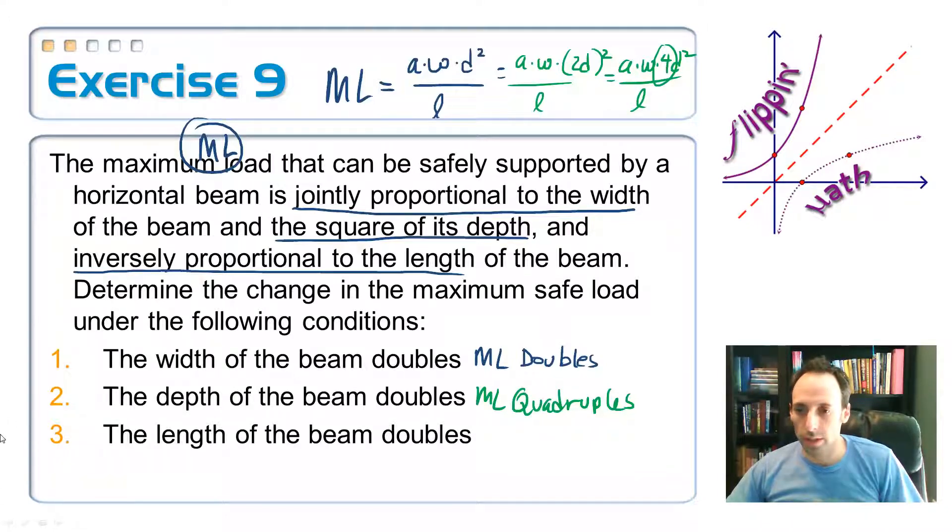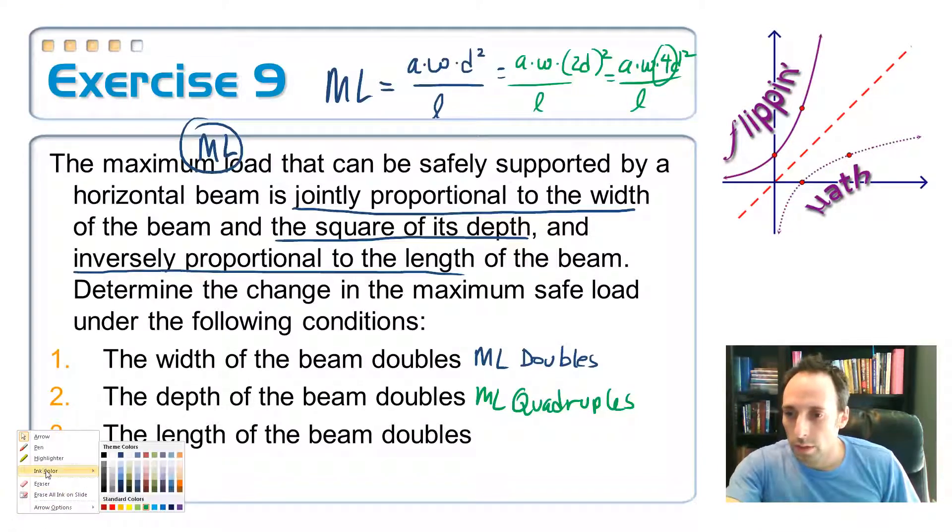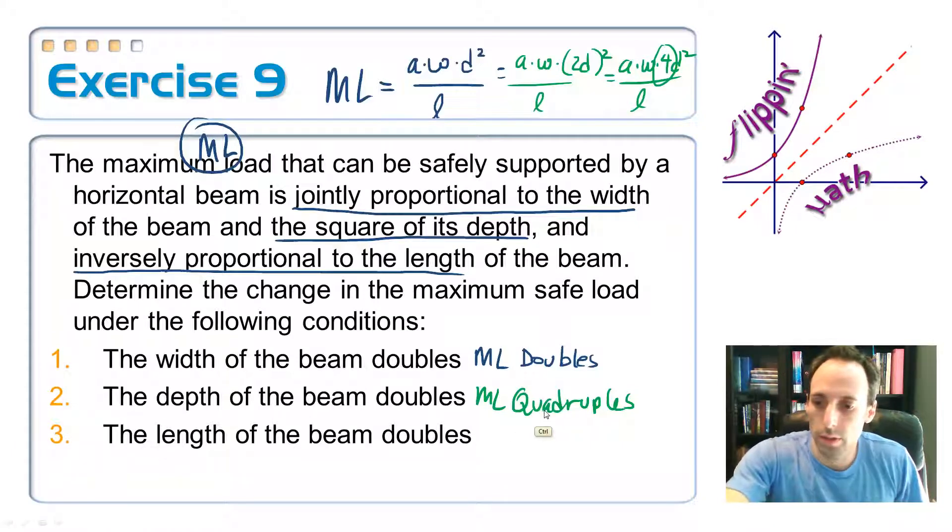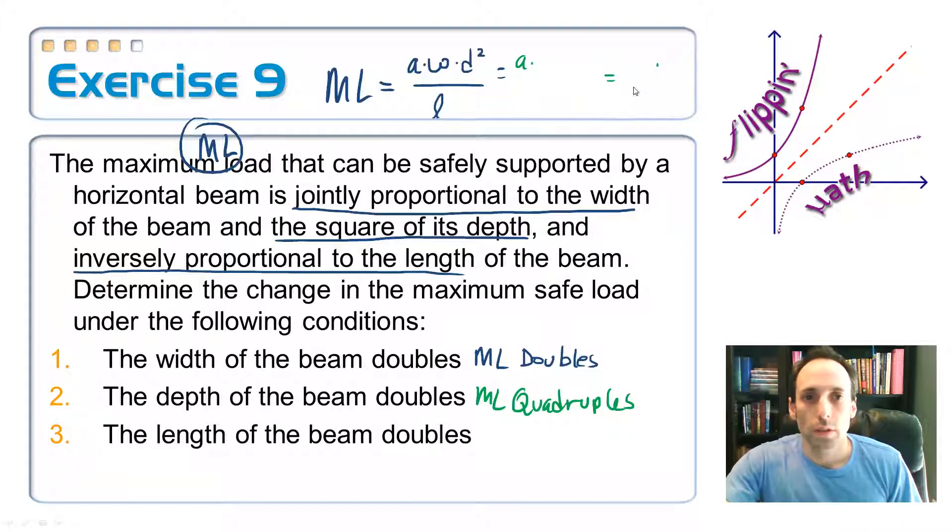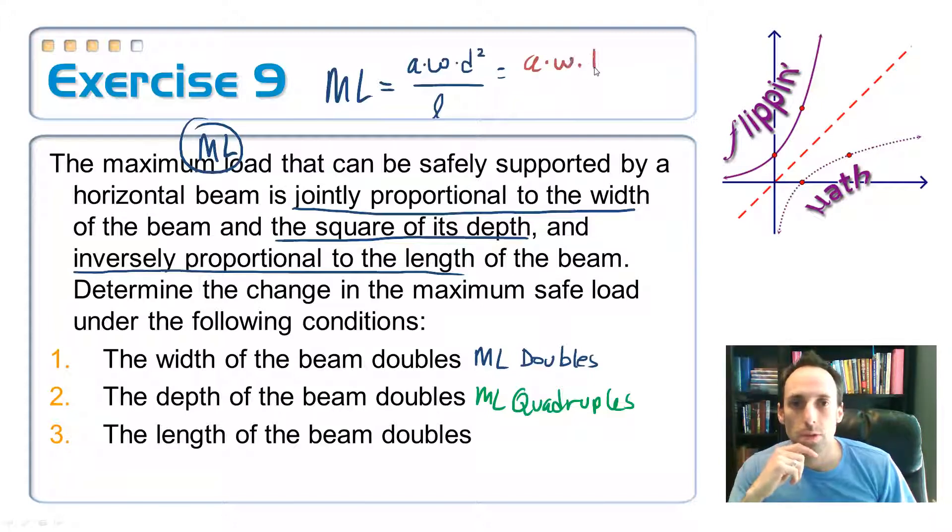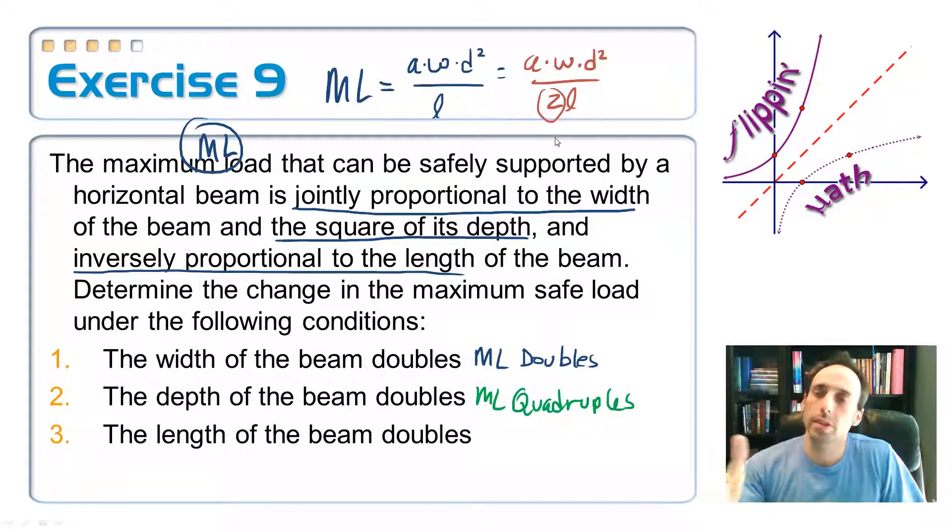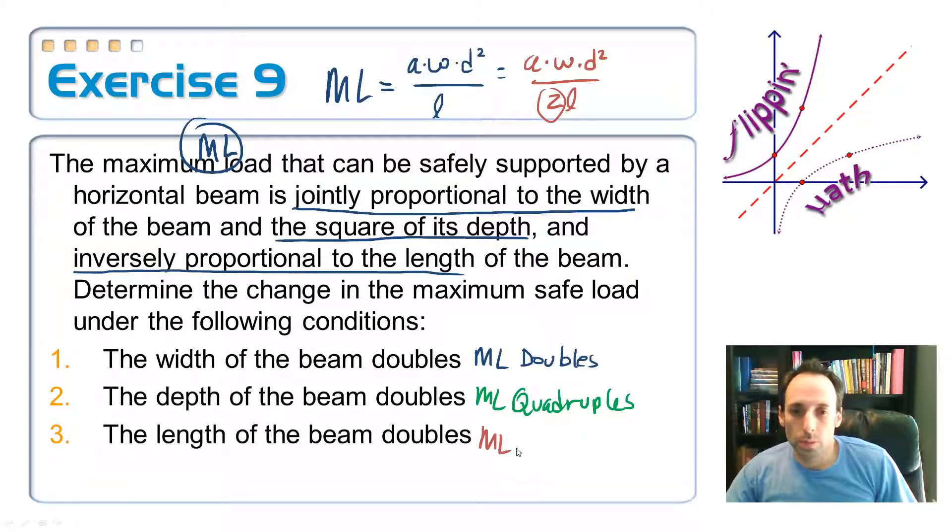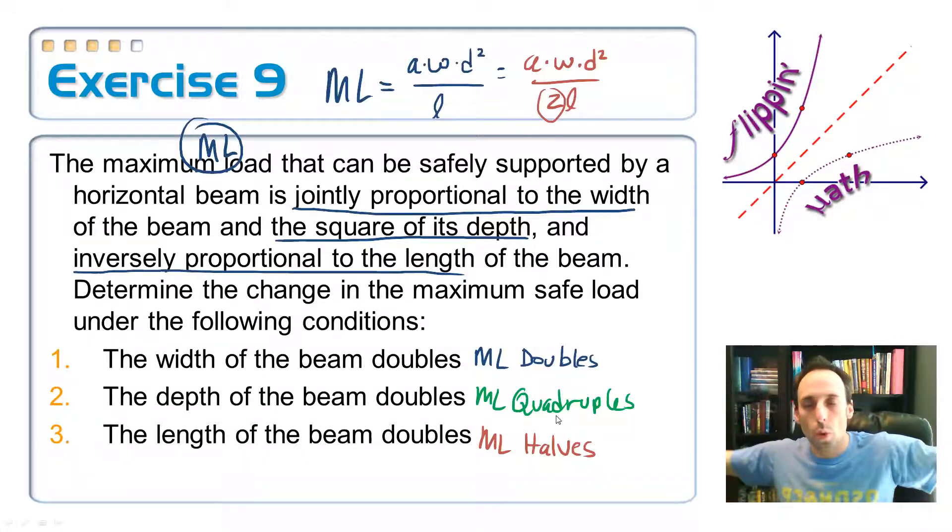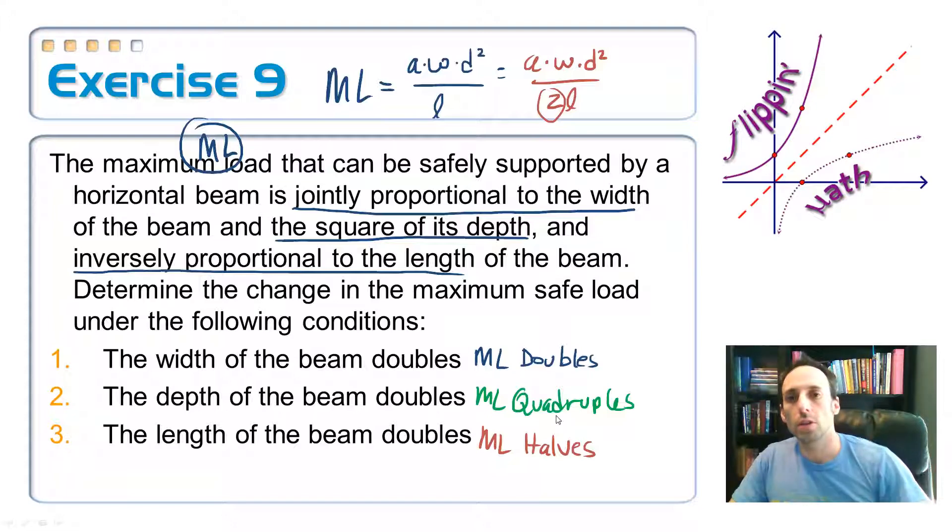Okay. And the last one. The length of the beam doubles. What's that going to do? And we want the length of the beam to double this time. So A times W times D squared over 2L. So now compare this to the other one. Is it two times as big? No, we're dividing by two. We're dividing by two means that it's half as big. So the maximum load halves. It gets cut in half. So that makes sense. If you make your beam twice as long, it's not as strong anymore. It's a bow in the middle. So I can get all that information just from looking at the equation. So that's pretty handy there.